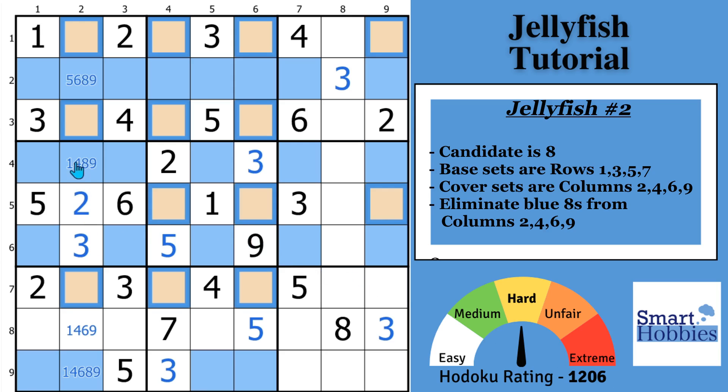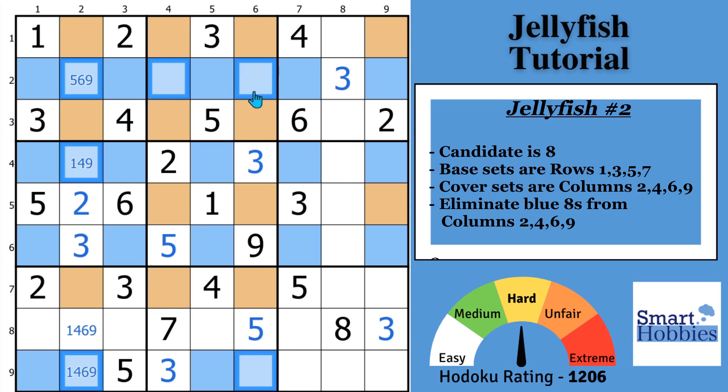And so now we can make eliminations. This time the base sets are considered our rows. And the cover sets where we're going to make the eliminations are considered our columns. So we can eliminate all these 8s from these cells plus all the colors here. You'd also be able to eliminate 8s if you had those marked in those cells. So that we eliminate all of those 8s there. Awesome.